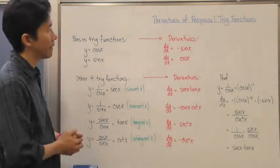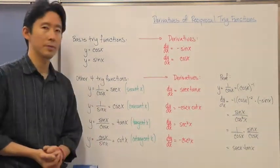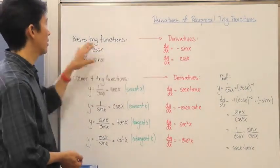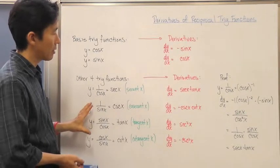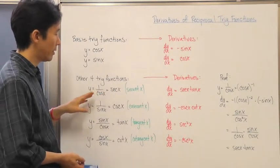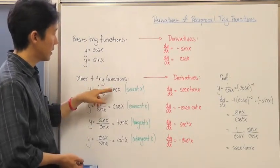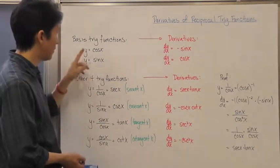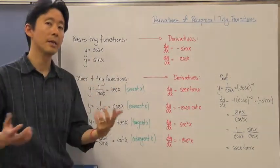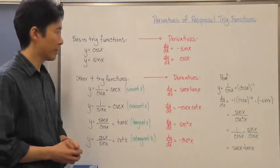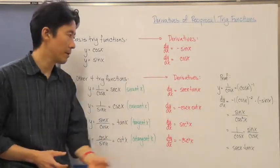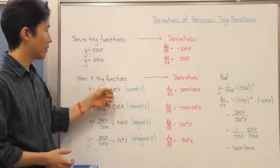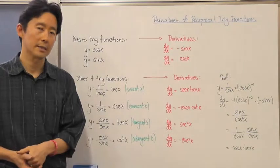So how do we go about finding the derivatives now of these reciprocal trig functions? Well, we know what the derivatives are for the basis trig functions. So so long as we can go ahead and determine what the derivative is of these other four trig functions in its form that involves both the sine and the cosine, and being that we know all of the rules for differentiation, we should be able to come out with these derivatives for these particular trig functions other than sine and cosine of x.